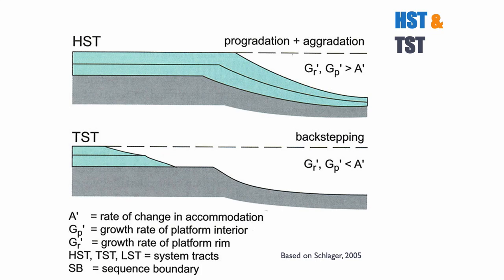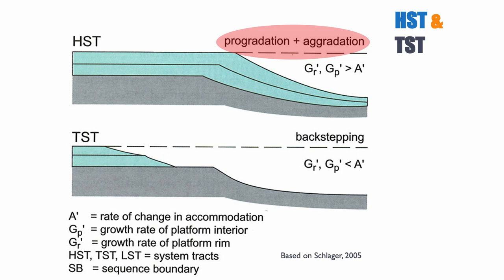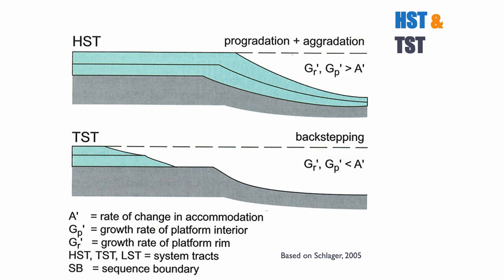Looking at the different system tracts: during the HST, because the rate of production on the rim (Gr) and the rate of production on the platform far exceed the rate of accommodation change, you typically see progradation and aggradation on carbonate systems. During the TST, the transgressive system tract, we typically see the reverse — the rate of production on the rim and platform is less than accommodation change, so we see backstepping and retrogradation of the system.